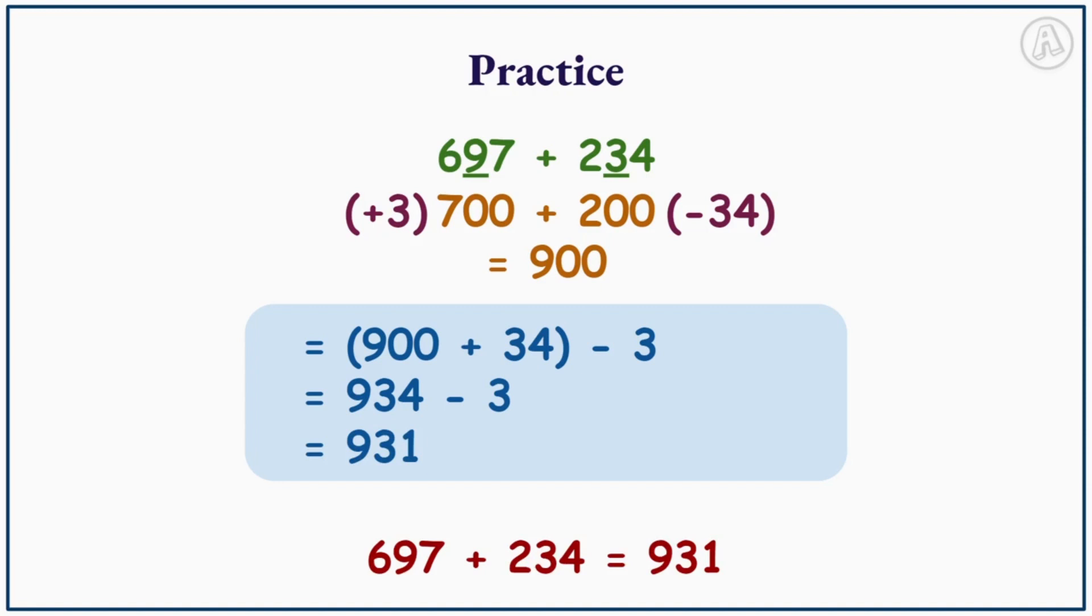So this means 697 plus 234 equals 931. Do you think you would be able to compensate an estimated answer to find an actual answer?